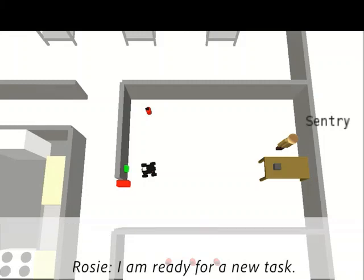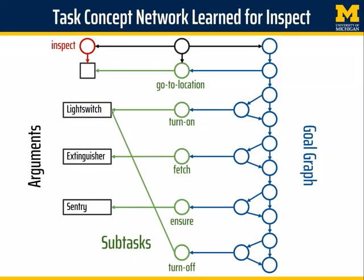At this point, Rosie has learned a general task structure that includes the arguments, subtasks, and a directed graph of subgoals that represents the control flow in the task. Since many of the subtasks were conditional, the goal graph has branching paths.